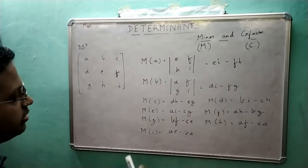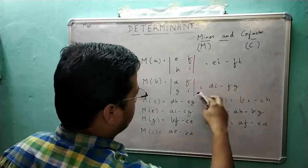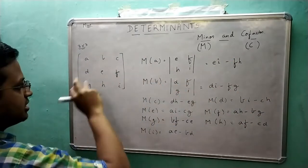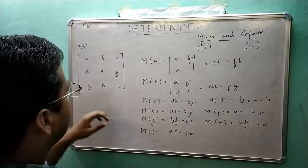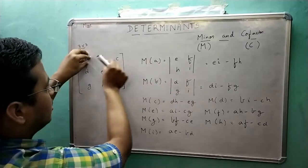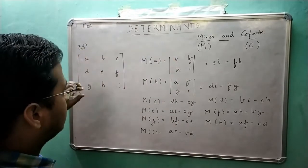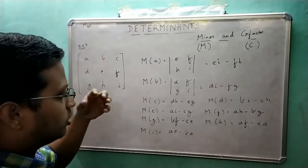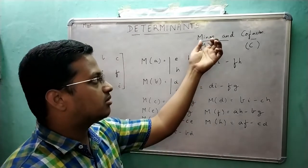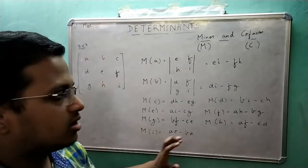Now, if you take all these minor values and write them as a matrix — replacing A with the minor of A, B with the minor of B, C with the minor of C, and so on — you will get a matrix called the minor matrix of the given matrix.